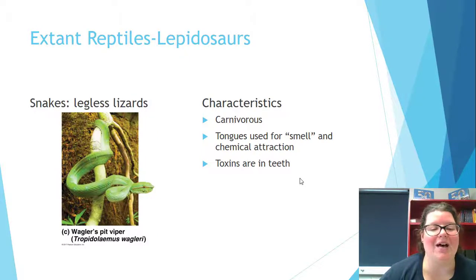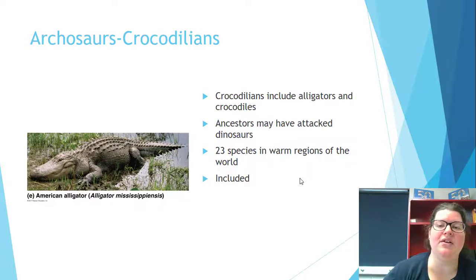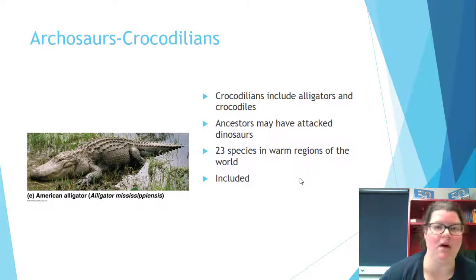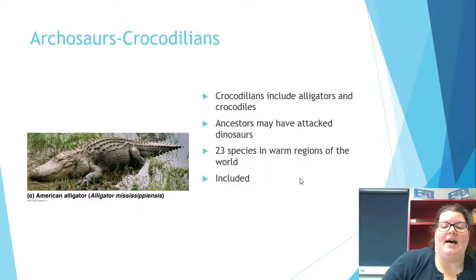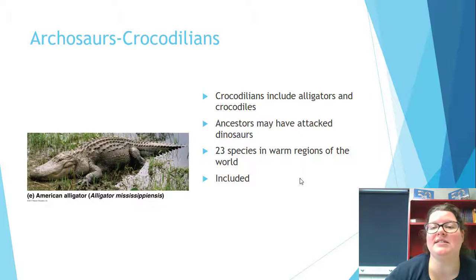Snakes are usually carnivorous. Archosaurs — crocodiles and alligators — are the closest things you'll encounter to a dinosaur. Alligators are close to things like the triceratops, while chickens are close to the T. rex or raptors. The only species native to North America is the American alligator, Alligator mississippiensis, first identified along the Mississippi River.